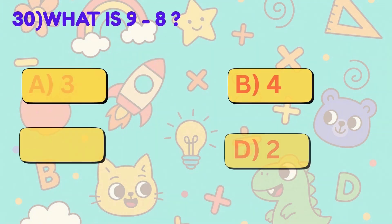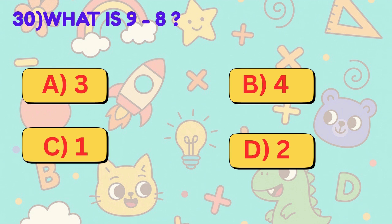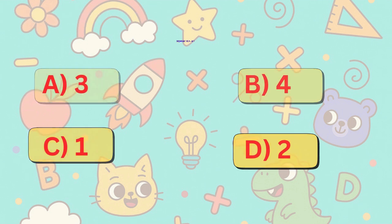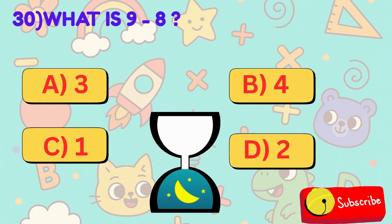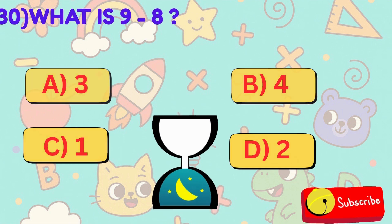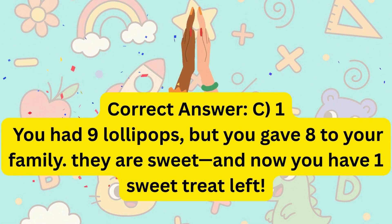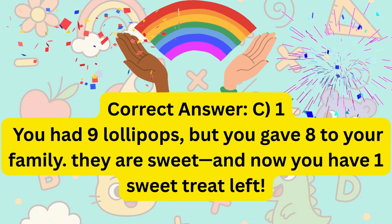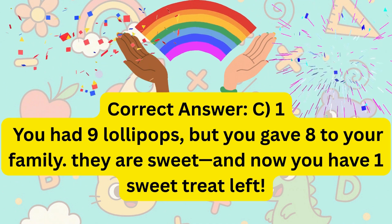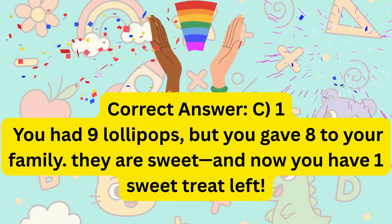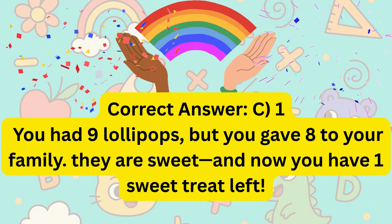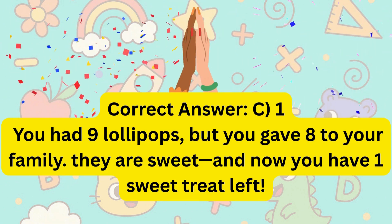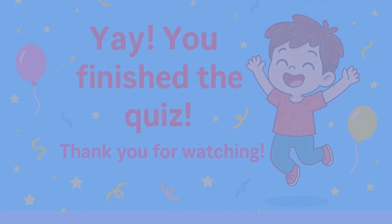30. What is 9 minus 8? Is it A, 3, B, 4, C, 1, or D, 2? Correct answer is C, 1. You had 9 lollipops, but you gave 8 to your family. Now you have one sweet treat left. Yay!